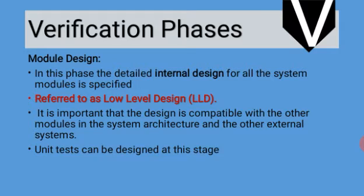The module design phase specifies the detailed internal design for all system modules and is referred to as low level design, while architecture design is referred to as high level design. Module design covers compatibility with allied modules, external systems, and how different modules interact with each other. Unit tests are designed based on the module design.